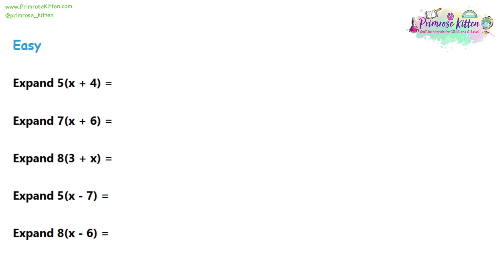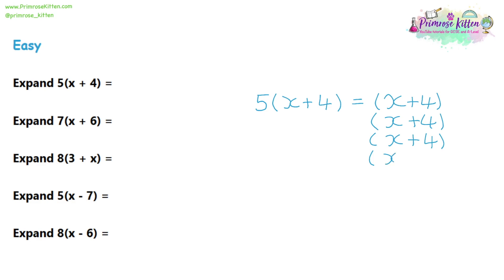We're gonna start off with expanding 5(x + 4). So what does this mean? Well, the bracket we have — x plus four — we have five sets of it, because we have a five at the start. So rather than writing the expression in the brackets five times, we just put a little five at the start to tell us how many we've got.